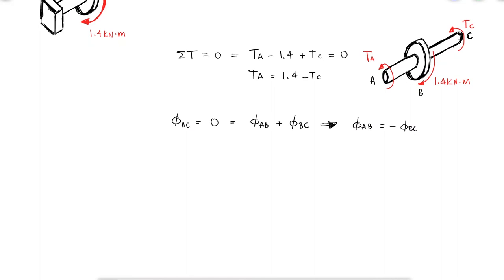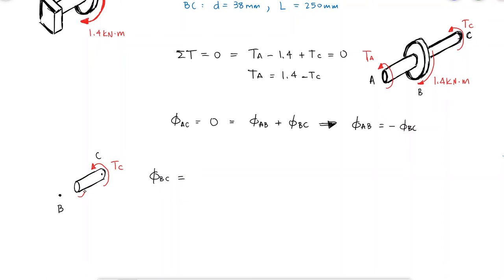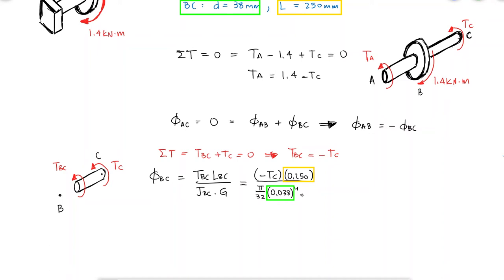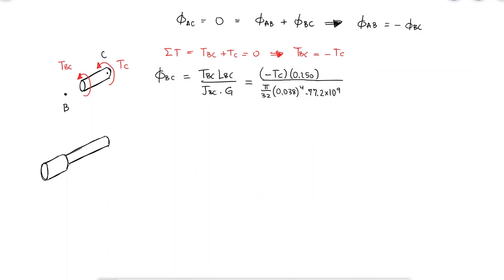The angle of twist of B with respect to C will depend on the internal torque between B and C. By performing a cut between C and B, we find that the internal torque TBC is equal to the negative value of the reaction torque at the wall C, and the shear modulus of the steel can be looked up and found to be 77.2 gigapascals.